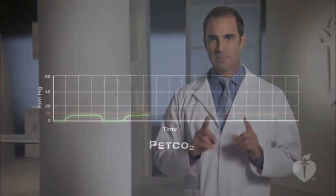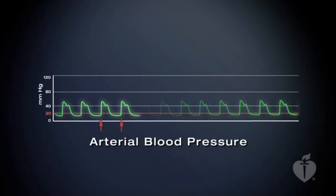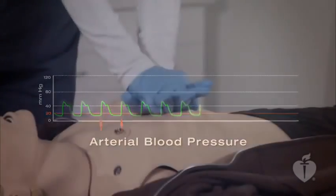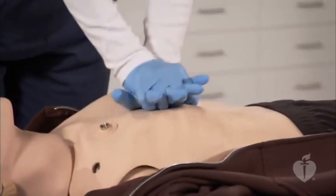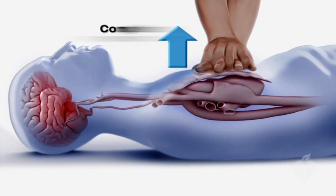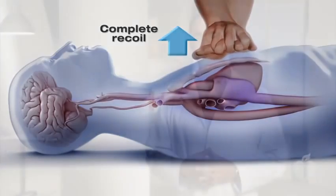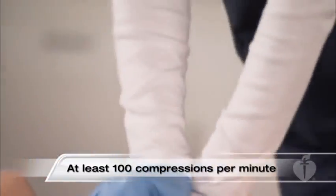We'll discuss the details of waveform capnography later in this course. Specific patients with an end-tidal CO2 reading of less than 10 millimeters of mercury may not achieve ROSC. For intra-arterial relaxation pressures, a reading of less than 20 millimeters of mercury indicates ineffective compressions. To perform high-quality chest compressions, you should push hard and push fast. Push hard means compress the chest at least two inches and allow complete chest recoil after each compression. If the chest does not completely recoil, coronary perfusion will remain low. Push fast means to deliver at a rate of at least 100 compressions per minute.